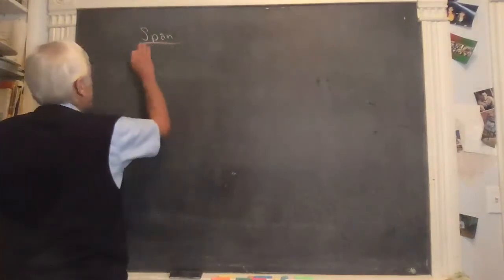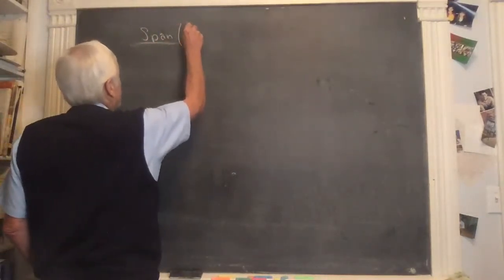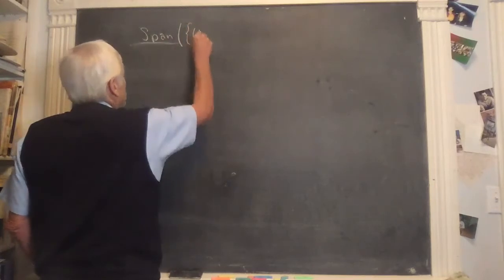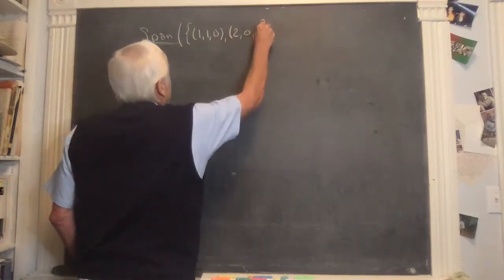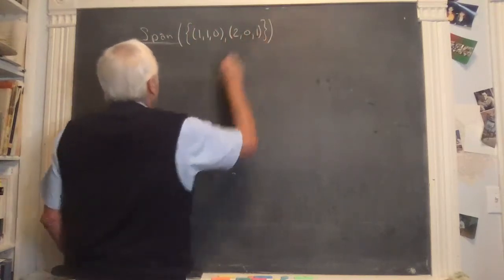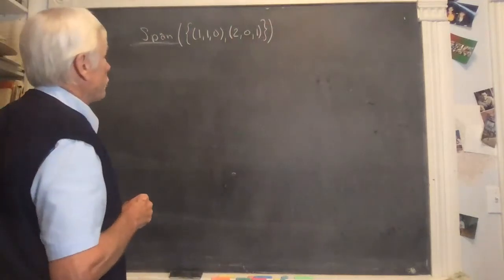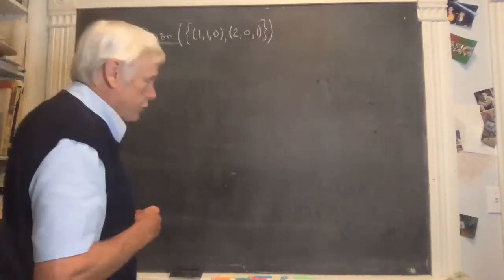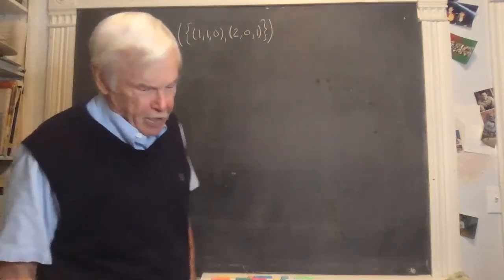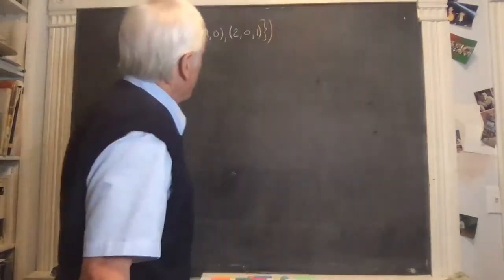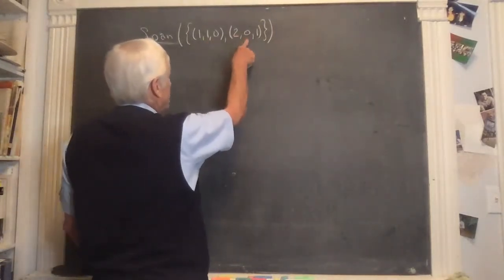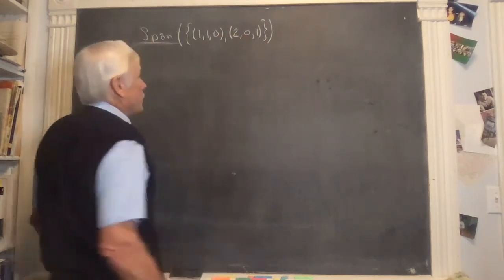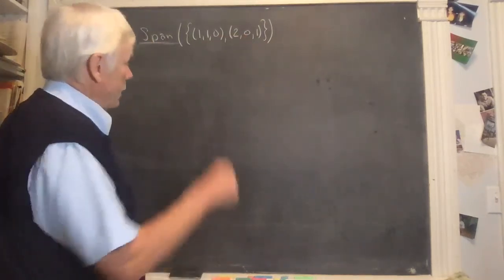So let's start with the span of just two vectors. I'm going to give you two vectors: [1,1,0] and [2,0,1] — each one in three-dimensional space. We want to see what is the length and breadth of the ultimate reach of these. If you travel in this direction by any amount and in this direction by any amount, what locations in three-dimensional space can you get to?